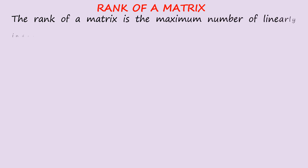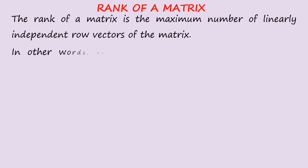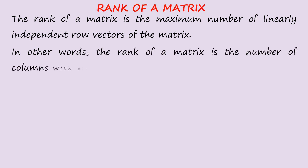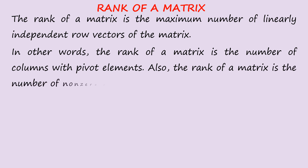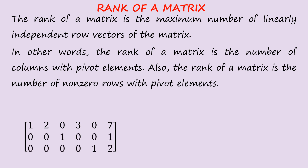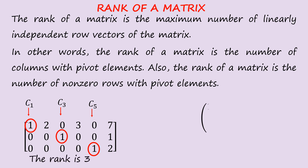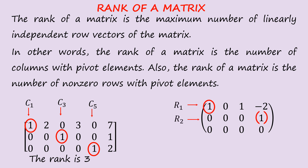Rank of a matrix: the rank of a matrix is the maximum number of linearly independent row vectors, equivalently the number of columns with pivot elements, or the number of non-zero rows with pivot elements. For example, if the first, third, and fifth columns have pivot 1s, then the rank is 3. In another example, if R1 and R2 have pivot 1s but R3 does not, then the rank is 2.